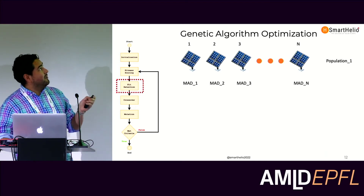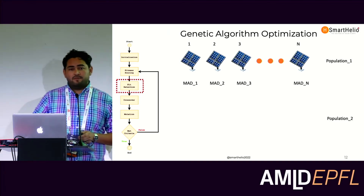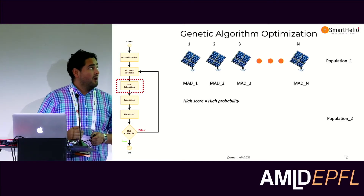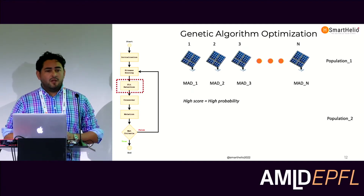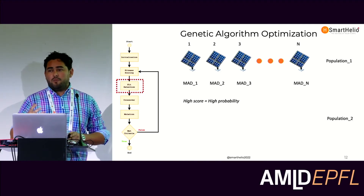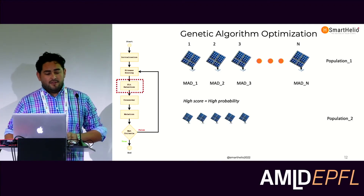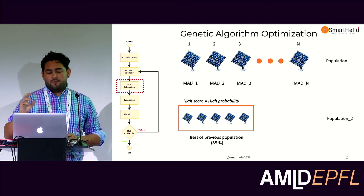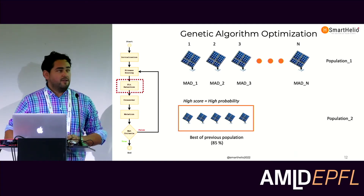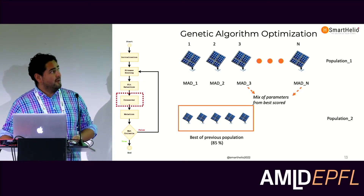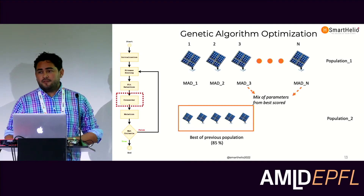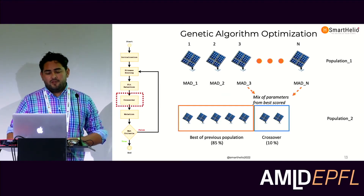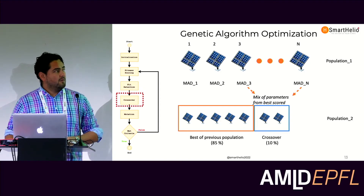In the second part, fitness selection, we start creating our second generation of systems. As I mentioned, everything is inspired by evolution — higher-scoring plans have more probability of passing to the next generation. We assume we take 85% of the next population based on the probability from the current generation. Then we go to the crossover part, which is a mix of characteristics from two plants to create a new plant for the next generation. We defined 10% for the crossover part.